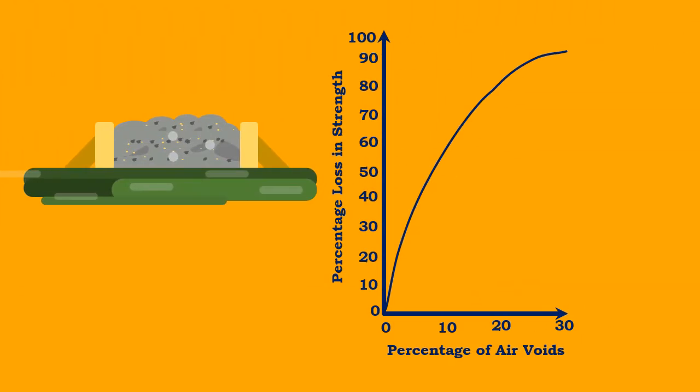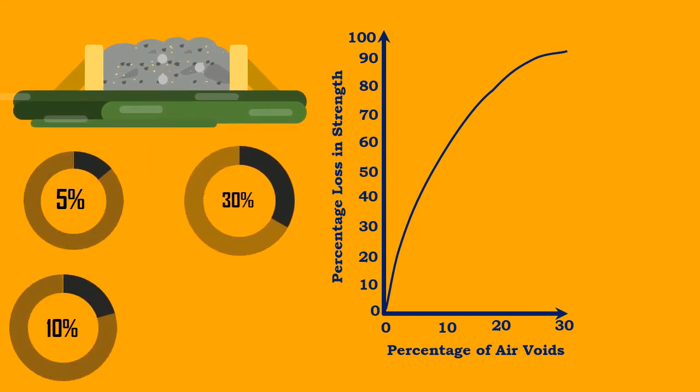Inadequate compaction leading to air void contents of 5% and 10% result in a loss of strength of 30% and 50%, respectively.